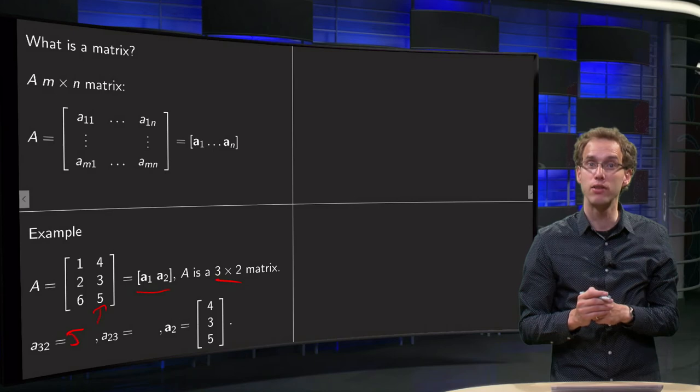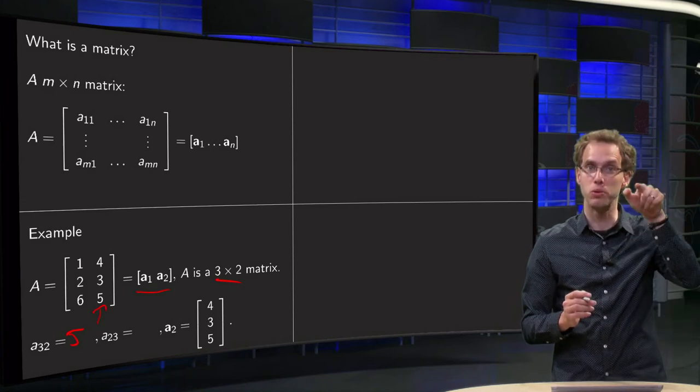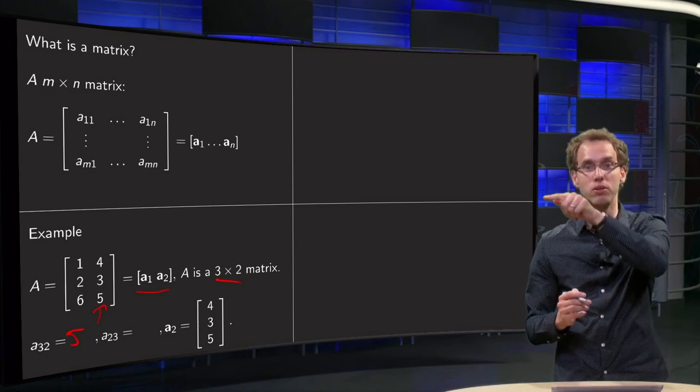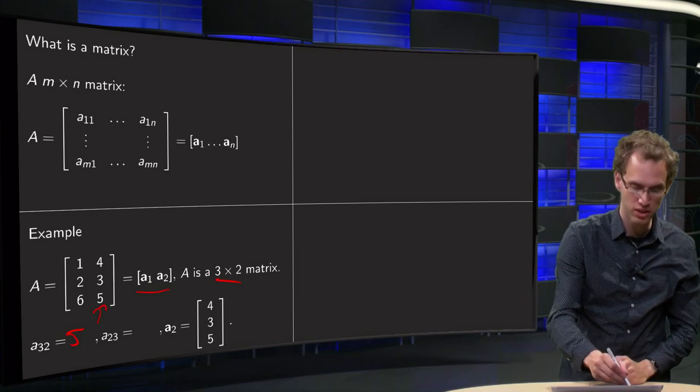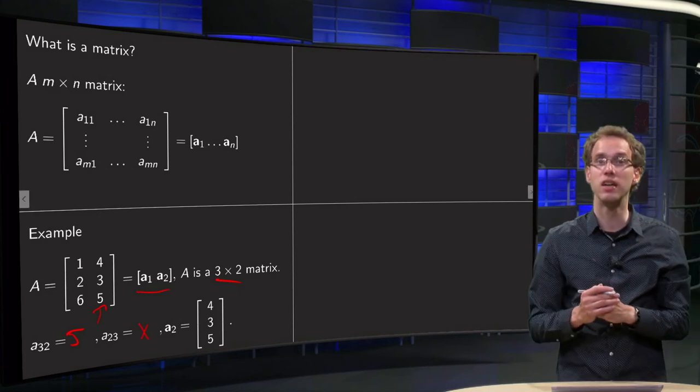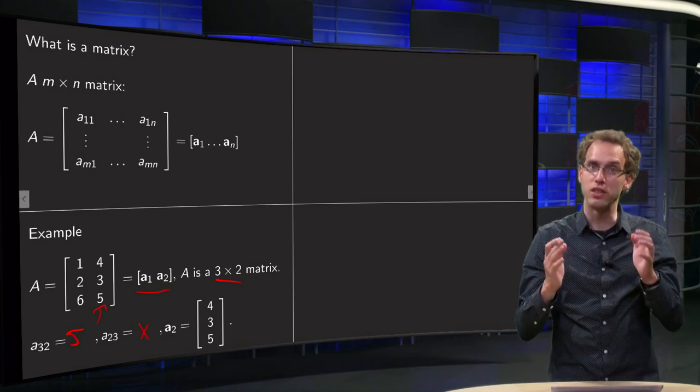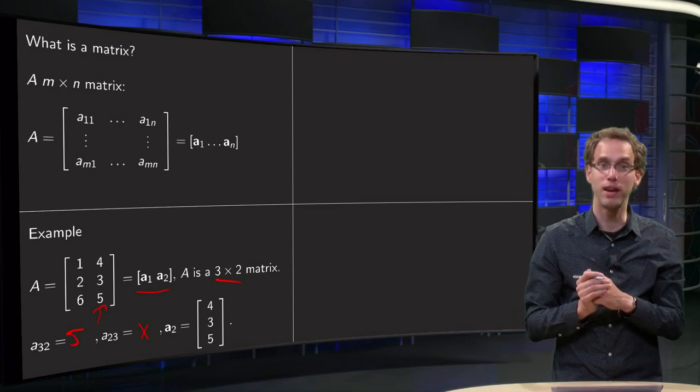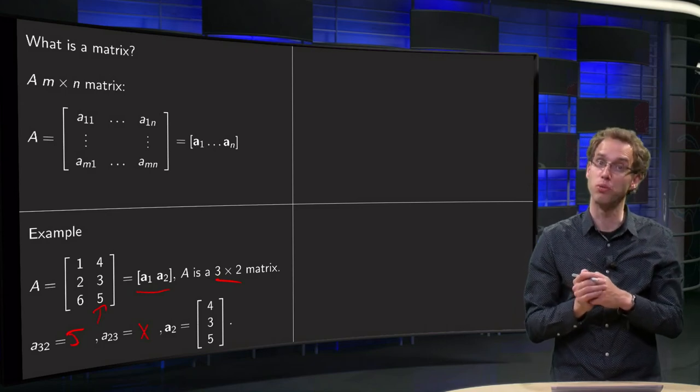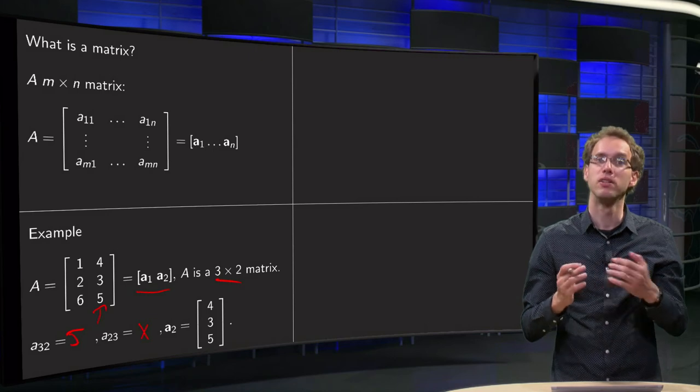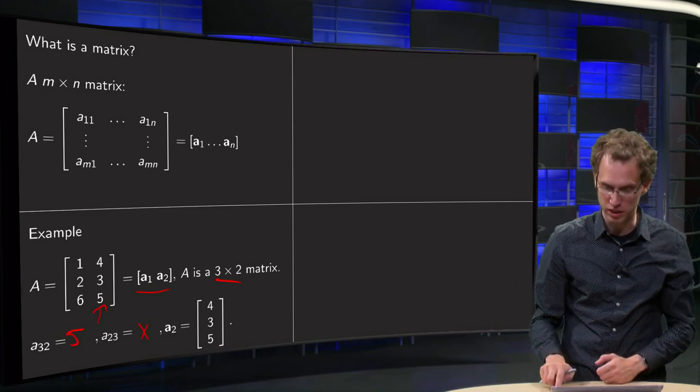What would happen if we try to find a23? Well then we go to the second row, 1, 2, 3 to the third column, which does not exist. And if we write it as a sequence of columns, the first column would be 1, 2, 6 and the second column, a2, would be 4, 3, 5. So that's a few of the conventions.